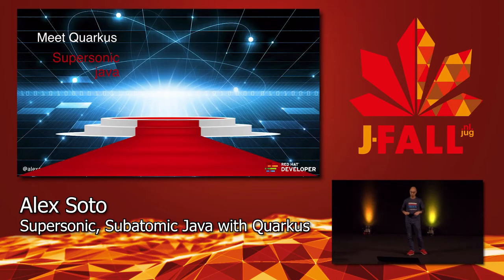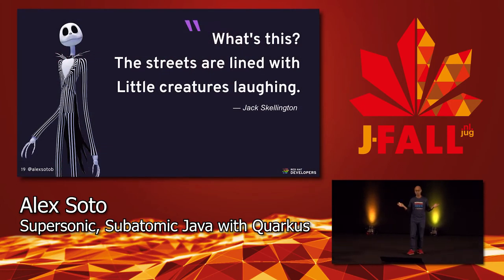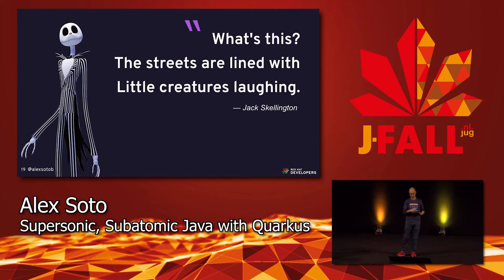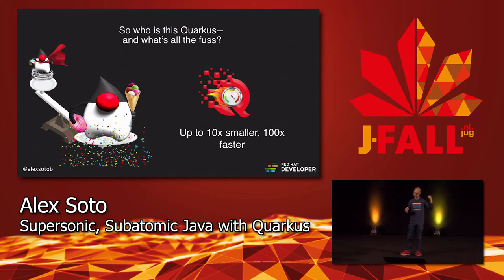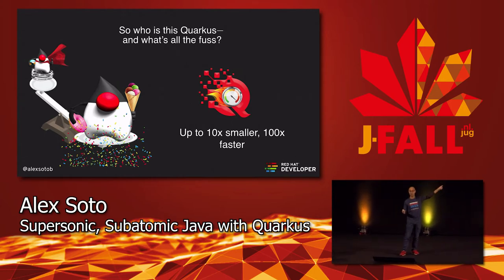This is exactly what we are going to try to fix with Quarkus. Quarkus is an open source project sponsored by Red Hat that enables you to create Kubernetes-native applications, and also targets the serverless ecosystem with really fast boot-up times and low memory footprint. With Quarkus you can get an enterprise application that is ten times smaller and one hundred times faster — and it's true, you'll see it.